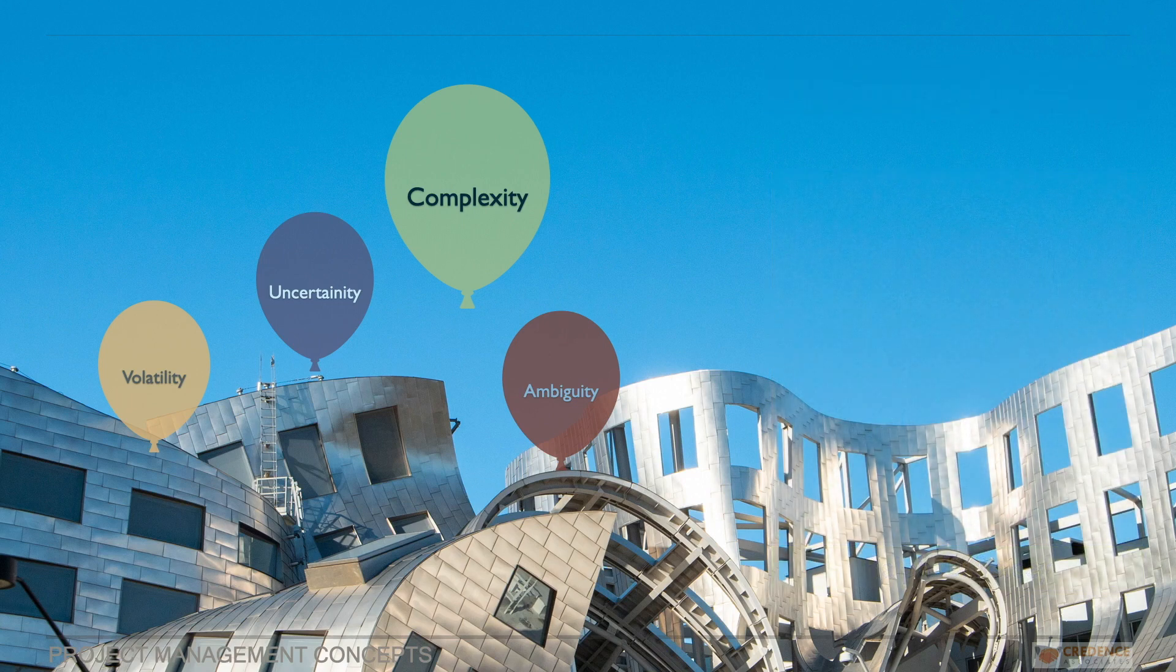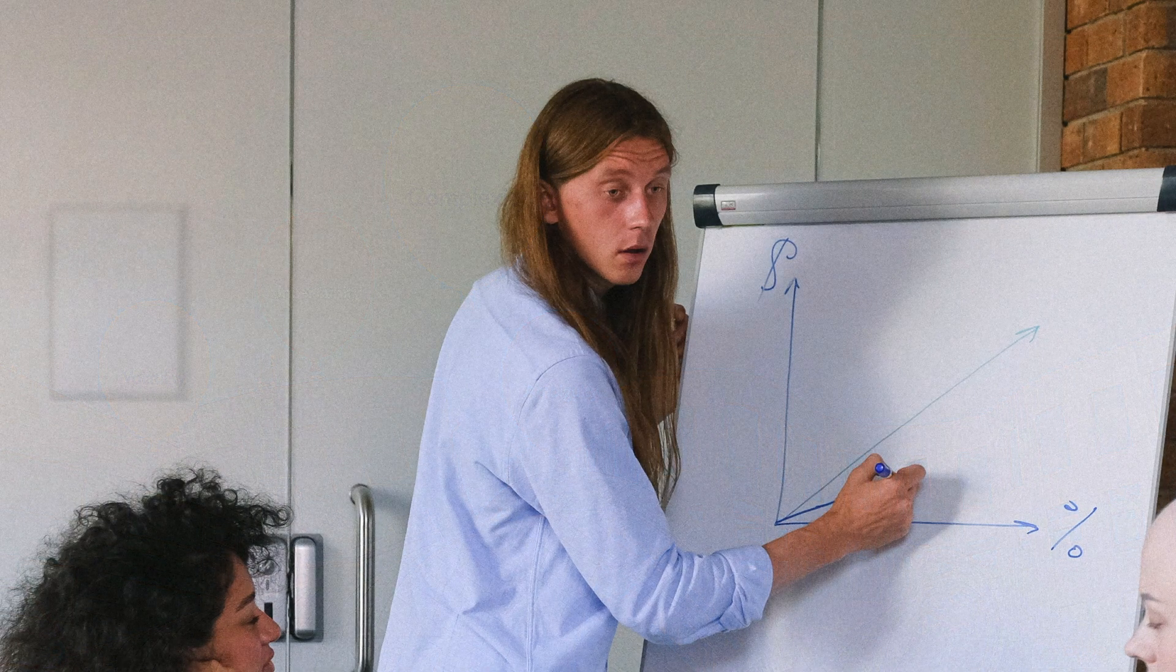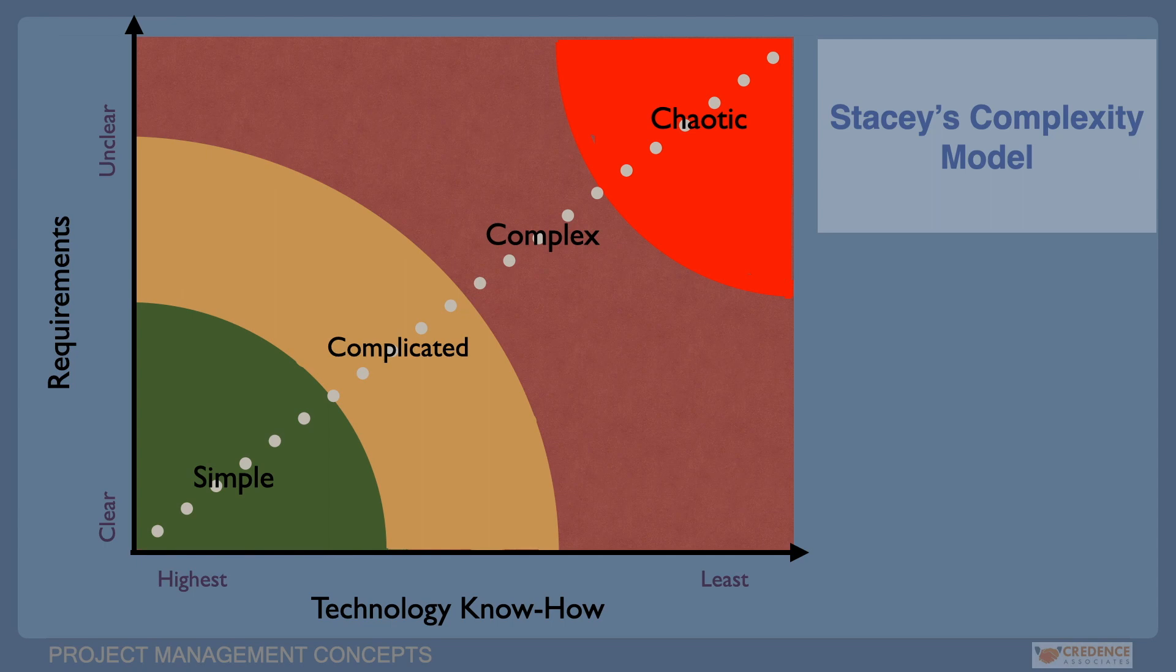One important aspect of project planning is to choose the development approach and Stacey's Matrix can help to solve the problem. Let us study the Stacey's Matrix to choose the best suitable development approach. Consider x-axis for technical know-how as ambiguity and y-axis for clarity of requirements as uncertainty.